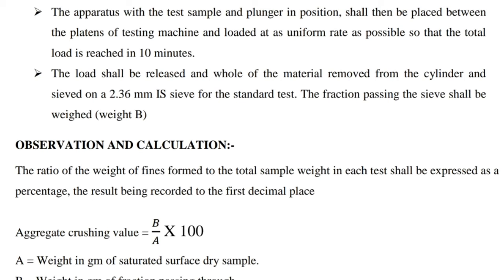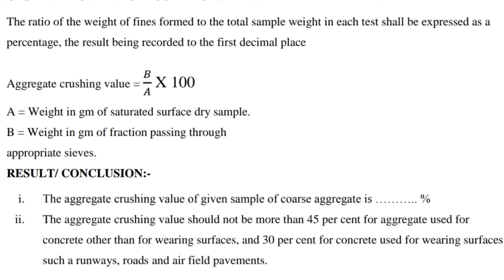Observation and Calculation: The ratio of the weight of fines formed to the total sample weight in each test shall be expressed as a percentage, the result being recorded to the first decimal place. Aggregate crossing value = (B / A) × 100, where A is the weight in grams of the saturated surface dry sample, and B is the weight in grams of the fraction passing through the appropriate sieve.